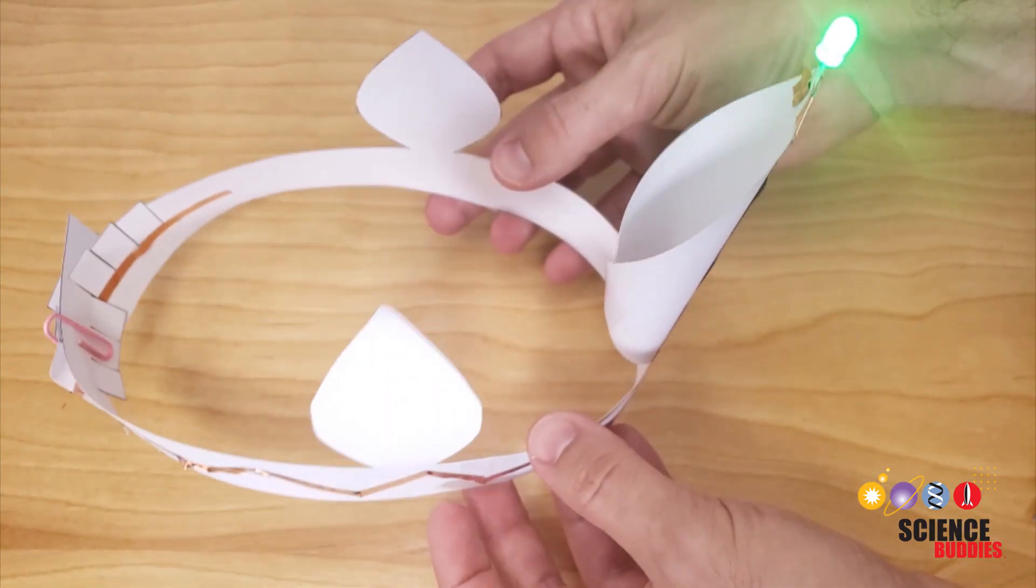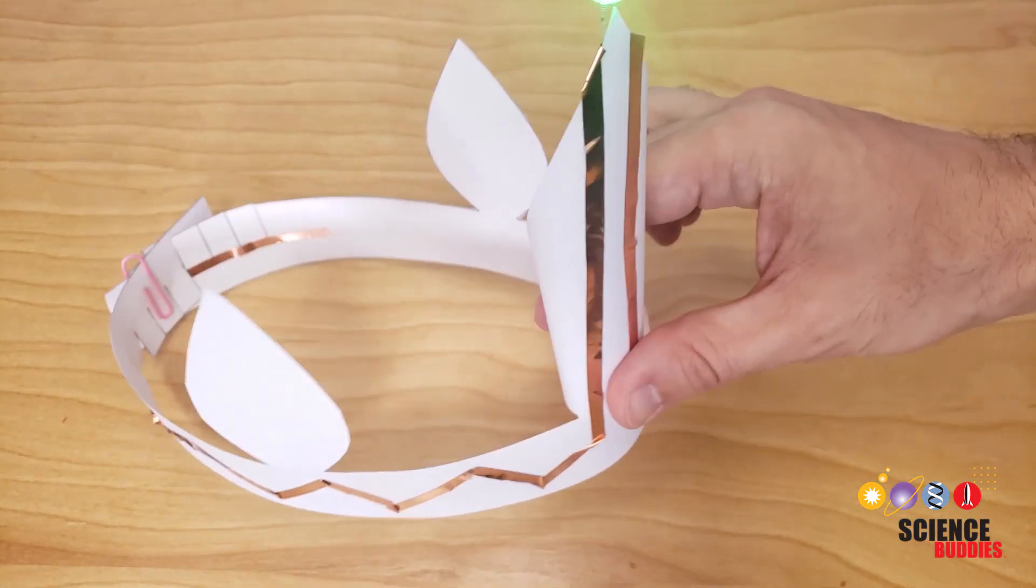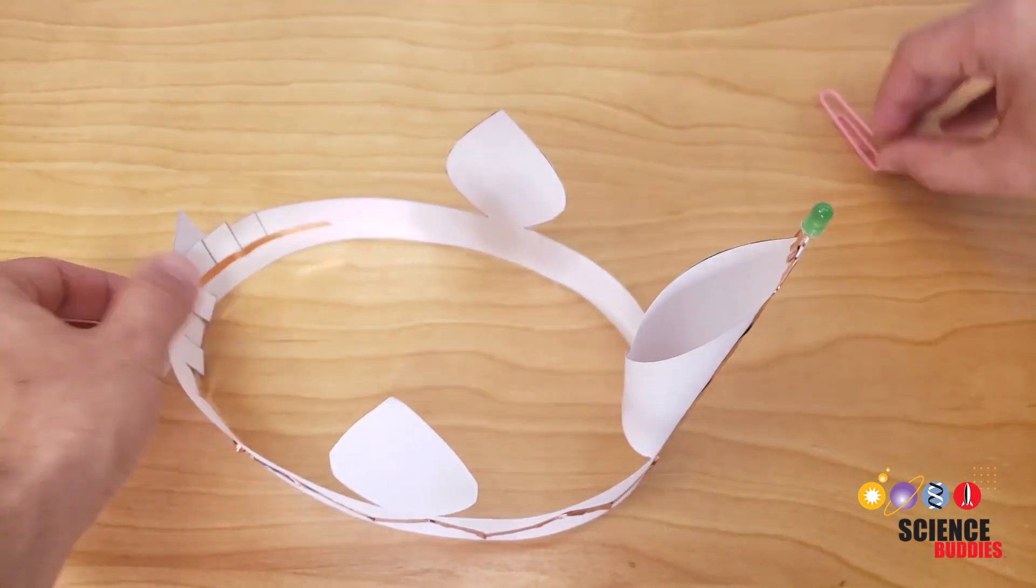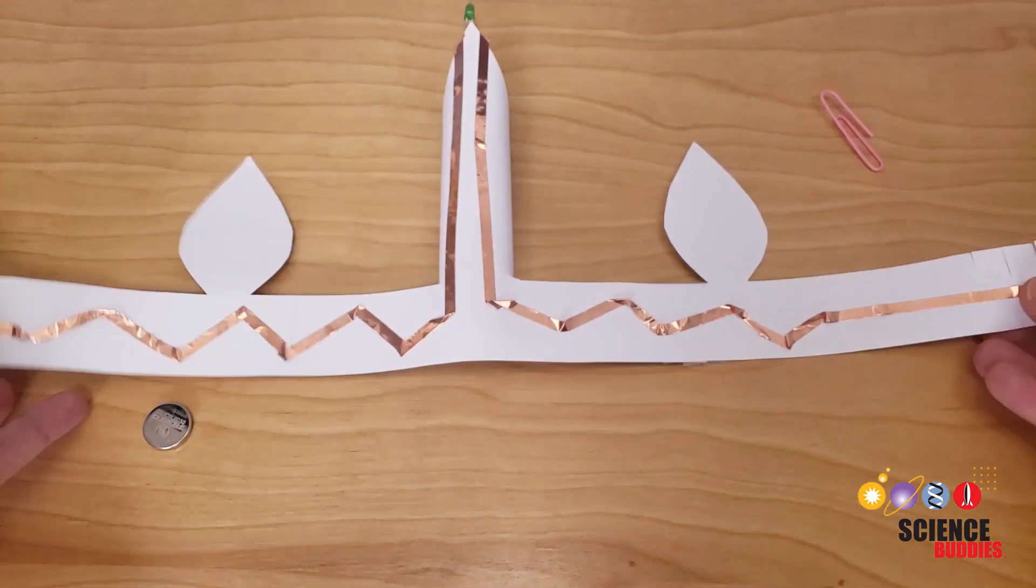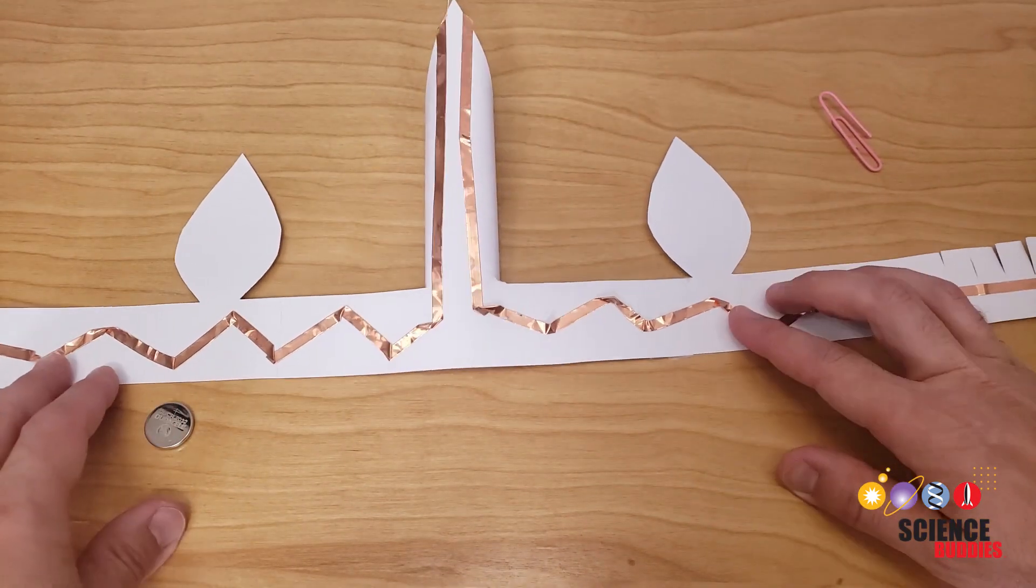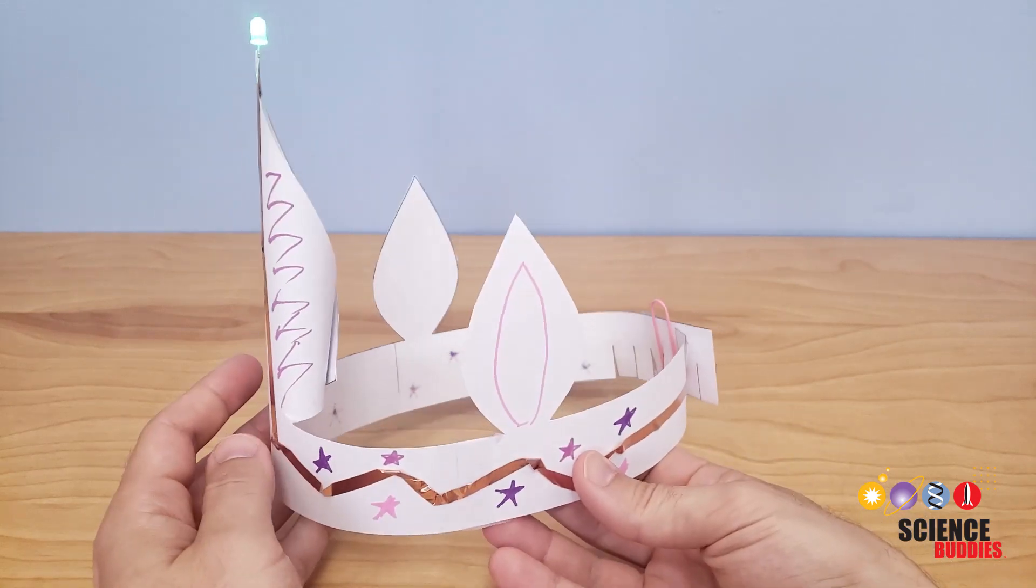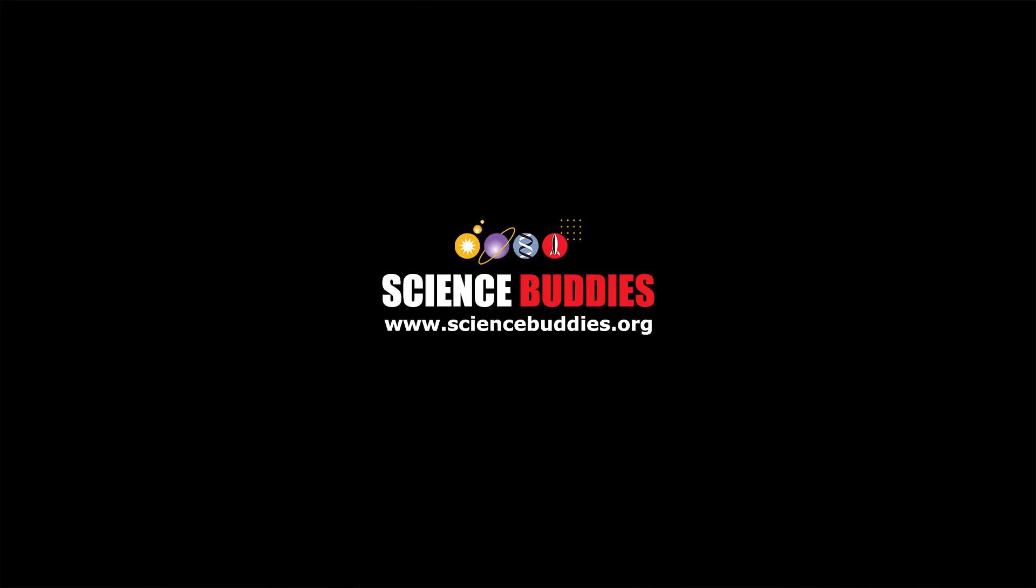Of course if you would like to decorate your headband that might be a little bit easier to do while it's flat, so you can always just slide up the paper clip, remove the battery, slide the tabs apart and lay your headband flat again to decorate. For more paper circuit projects and thousands of other fun hands-on science and engineering projects, visit us online at www.sciencebuddies.org.